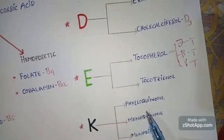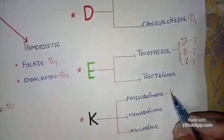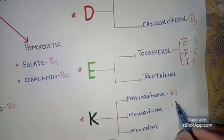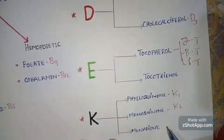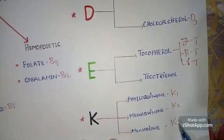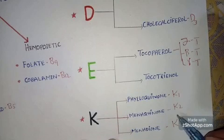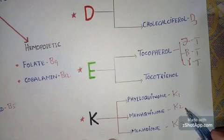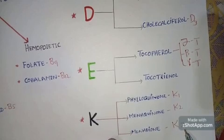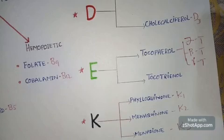Now let's talk about vitamin K, which has three different forms: phylloquinone, also called vitamin K1; menaquinone, also called vitamin K2; and menadione, also called vitamin K3. Vitamin K1 is obtained from plant sources, vitamin K2 is obtained from animal sources, and menadione is the synthetic form. This is all about the classification of vitamins.